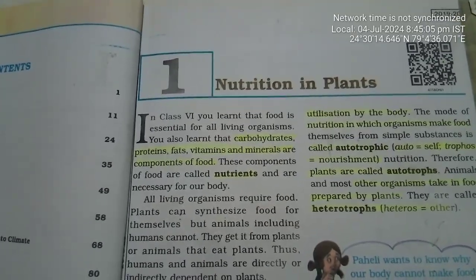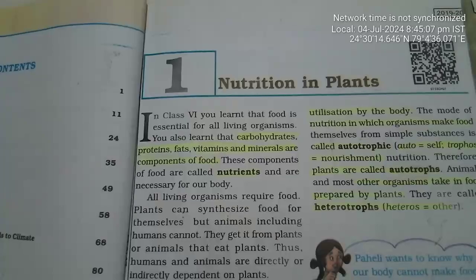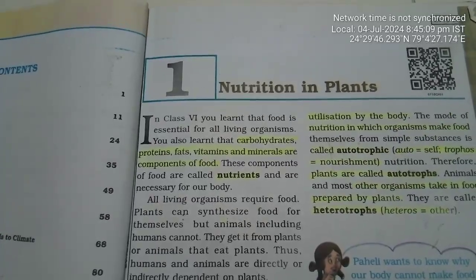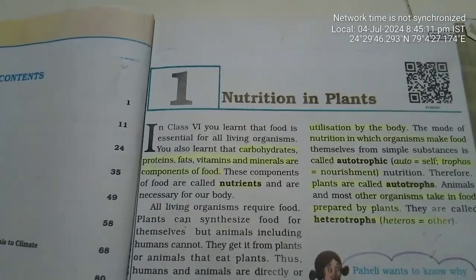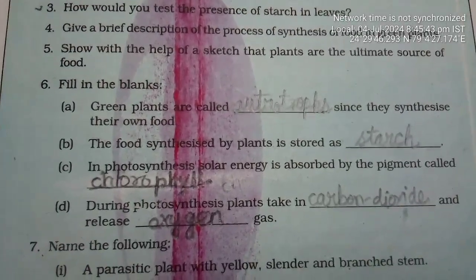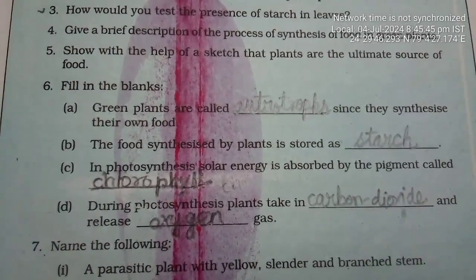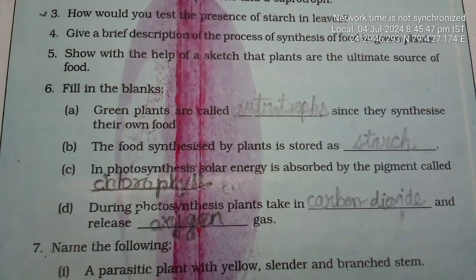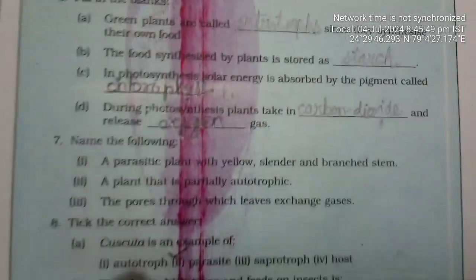Welcome to KD Activity Channel. Class 7 NCERT Science, Chapter 1: Nutrition and Plants. Bookwork - Fill in the Blanks. The answers are: Autotrophs, Starch, Chlorophyll, Carbon Dioxide, and Oxygen.